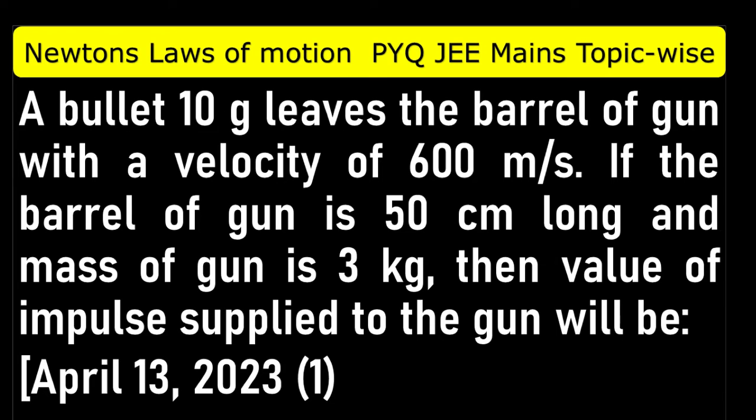A bullet of 10 grams leaves the barrel of a gun with a velocity of 600 meters per second. If the barrel of the gun is 50 centimeters long and the mass of the gun is 3 kilograms, then find the value of impulse applied to the gun.